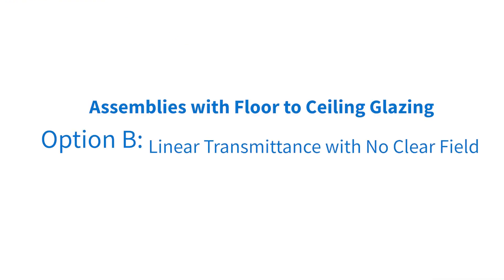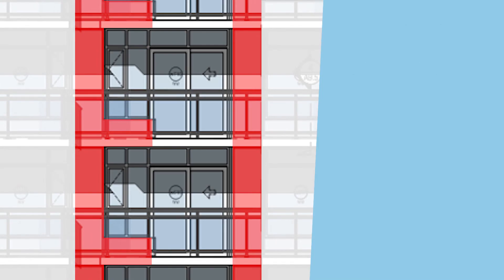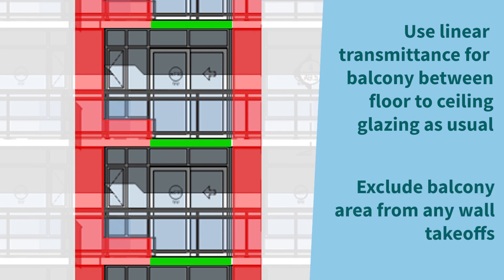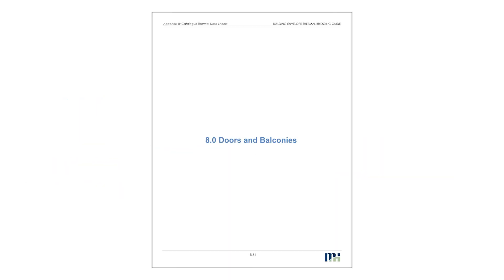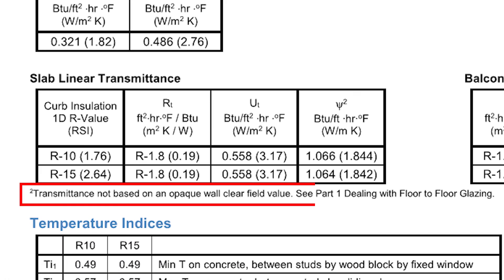Option B: Linear transmittance with no clear field. We can also use the linear transmittance for the slab and curb only, with the length of the balcony under the glazing system. However, we would not include any of the balcony in the area takeoffs. This means that all the heat flow from the slab and the curb is contained within the linear transmittance. These special transmittances can be found in Section 8, and are noted when they are not associated with a clear field assembly.